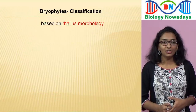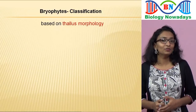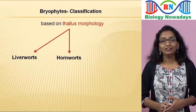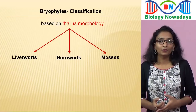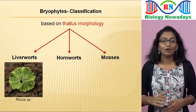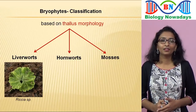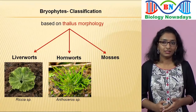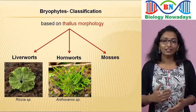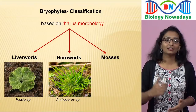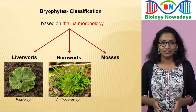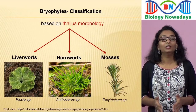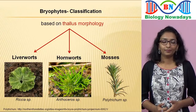Based on the thallus morphology, bryophytes are traditionally divided into three classes: the liverworts, the hornworts and the mosses. In liverworts, the thallus-like plant body is flat or prostrate. The plant body of hornworts is also flat and very similar to that of liverworts, but they have horn-like structures arising from the flat plant body. These horn-like structures are the sporophytes. The plant body of mosses is leafy and usually erect.